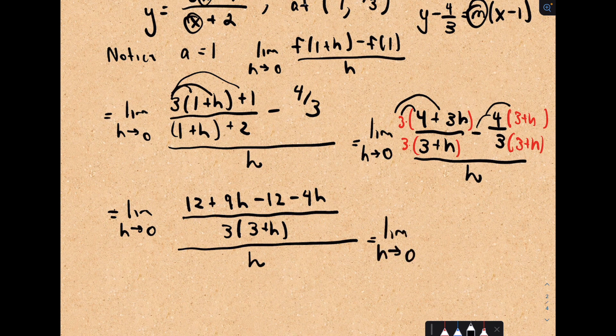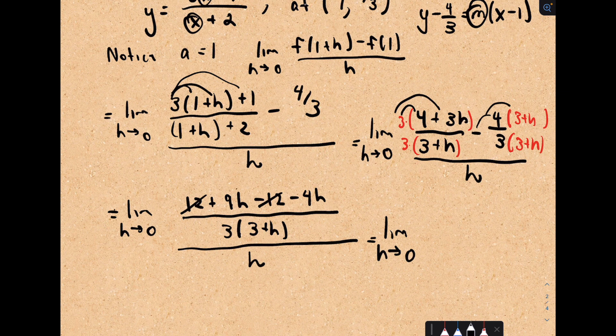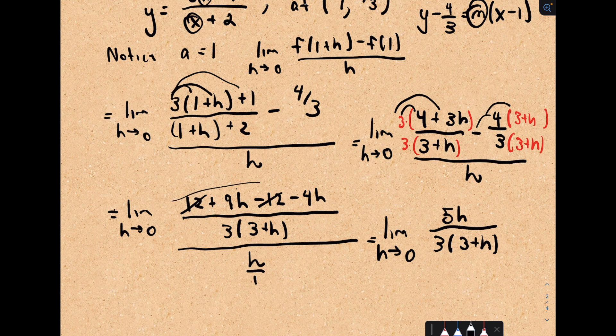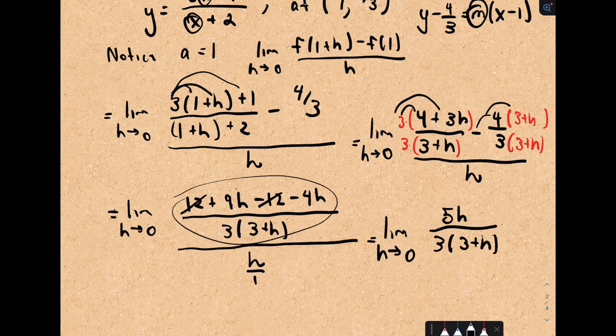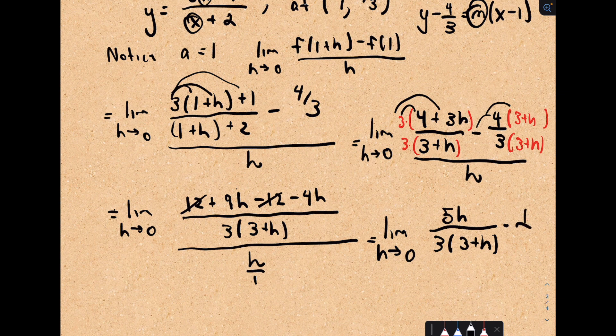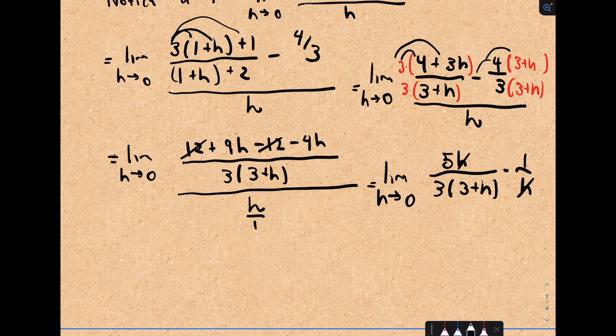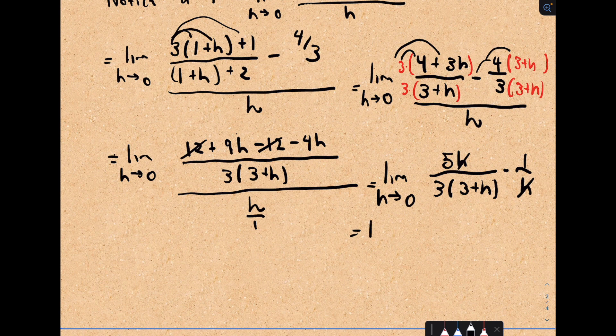Let's not forget our other h that was originally in the bottom. So in the numerator, the 12s cancel. It looks like we have 9h minus 4h, which is going to be 5h. That's divided by 3 times 3 plus h. Now you can think about the original h in the bottom as h over 1. And if we have a fraction divided by a fraction, we leave the top fraction alone and multiply by the reciprocal of the denominator, which would be 1 over h.